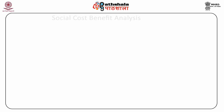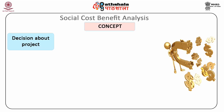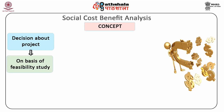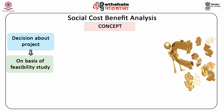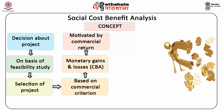Next, we discuss social cost-benefit analysis. Generally, the decision about a project is taken on the basis of three feasibility studies: technical studies, market studies, and commercial studies. The firm draws an inference based on these studies, and it is said to be project selection based on commercial criterion, i.e., monetary gains or losses — CBA. The firm, motivated by commercial return on its investment, may or may not be concerned about its impact on society.